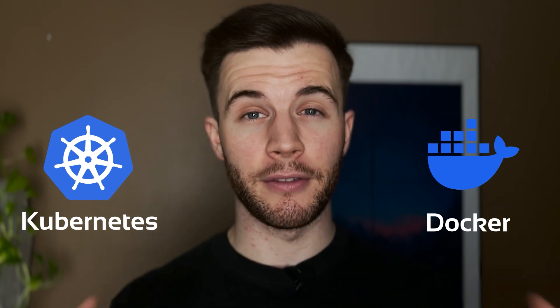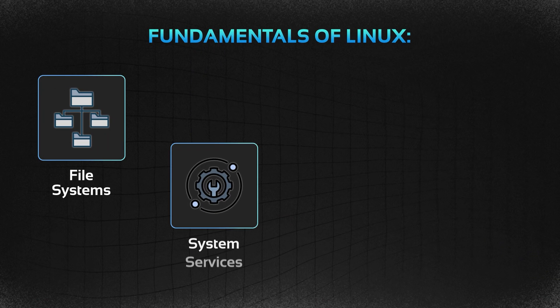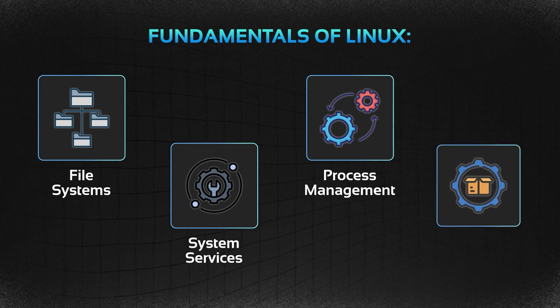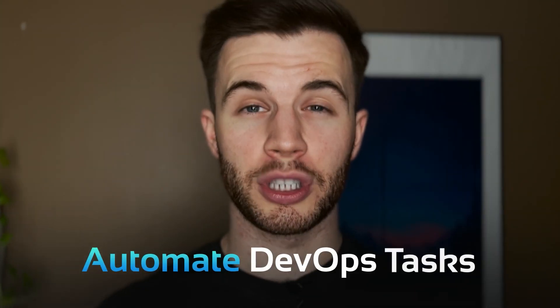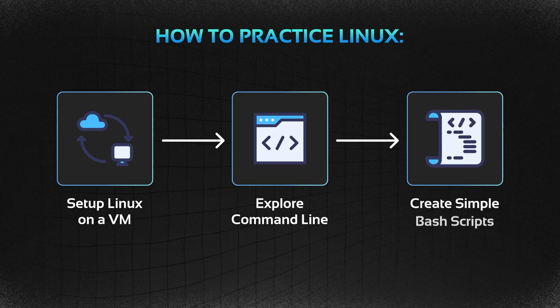Practice and get comfortable with Linux. Linux dominates the server environment in the cloud, and many DevOps tools such as Docker and Kubernetes thrive on Linux, making it a must-know for DevOps engineers. Start with the fundamentals such as file systems, system services, process management, and package management. Furthermore, get comfortable with the Linux command line and simple bash scripting to automate DevOps tasks. You can practice by setting up Linux on a VM, exploring the command line, and creating simple bash scripts.